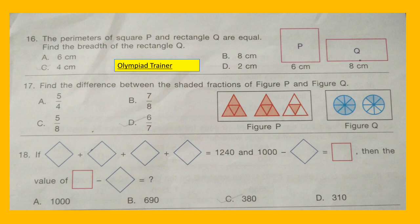Question 18: 4 diamonds is equal to 1240, and 1000 minus diamond is equal to square. Then the value of square minus diamond is equal to what? Options: A: 1000, B: 690, C: 380, D: 310.